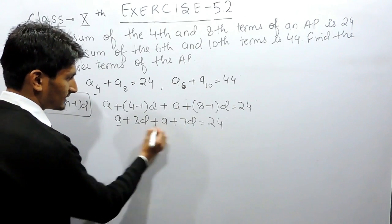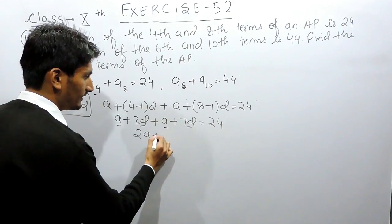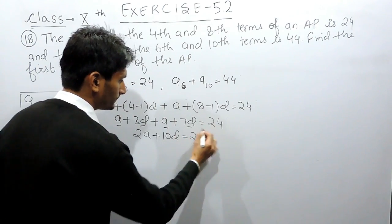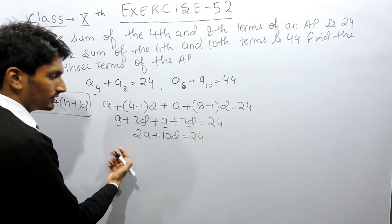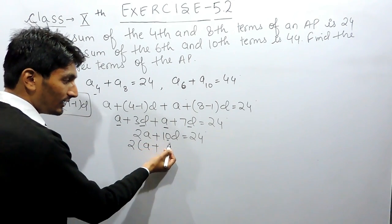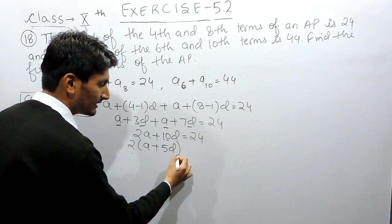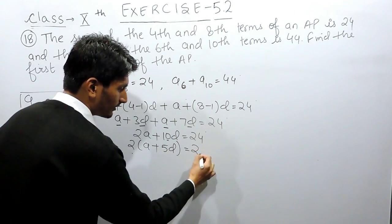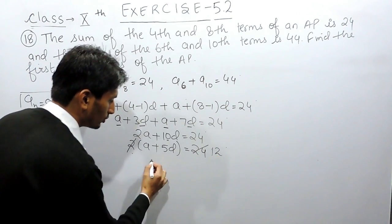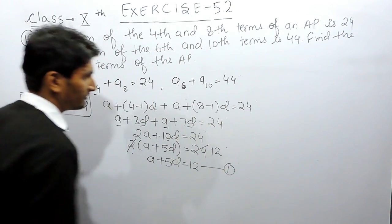Solving further, we add the like terms: 2A plus 10D equals 24. Taking 2 as common and cancelling both sides by 2, this simplifies to A plus 5D equals 12. This is our first equation.